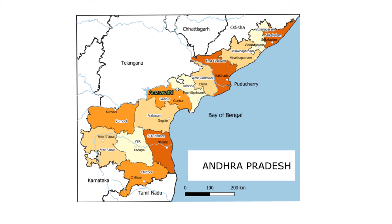The river Pennar flows from Anantapur to Kadapa and from Kadapa to Nellore, finally joining the Bay of Bengal. The three major rivers of Andhra Pradesh are Godavari, Krishna, and Pennar. Godavari and Krishna enter Andhra Pradesh from Telangana, while river Pennar enters from Karnataka. Godavari river enters Andhra Pradesh at the borders of East and West Godavari districts. River Krishna enters Andhra Pradesh in Kurnool district, and river Pennar enters in Anantapur district.